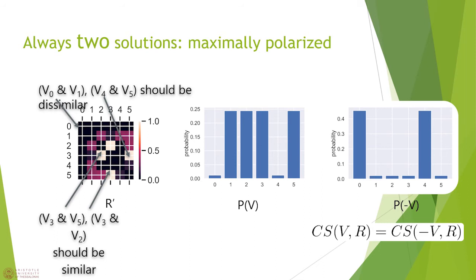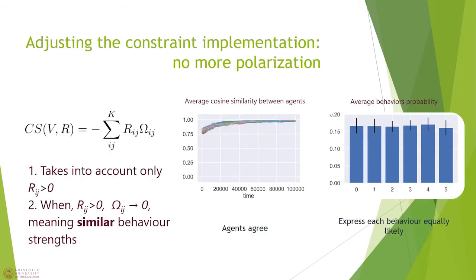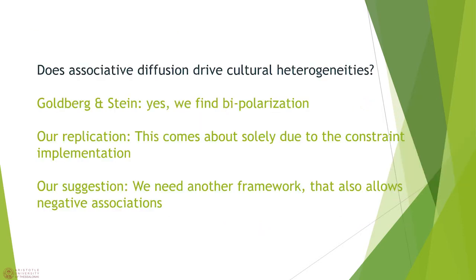In a way, the constraint is creating a synthetic negative association for behaviors associated less than 50%, and the constraint always allows for two maximally opposed solutions. We see an example of the association matrix and two probability vectors of preferences. Both the preference vectors are in accordance with the association matrix and we clearly see that 50% threshold in action. We adjusted the constraint function to do what it was likely intended to do, namely that positive associations push behaviors to have the same strength. In this case, we find no more polarization. Instead, all agents agree and they exhibit each behavior equally likely.